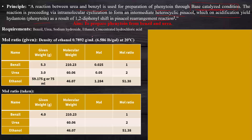The aim is to prepare phenytoin from benzil and urea. The requirements are benzil, urea, sodium hydroxide, ethanol, and concentrated hydrochloric acid. The density of ethanol is 0.7892 grams per mL at 20 degrees. The given mole ratio is 1:2:51.38 for benzil to urea to ethanol.